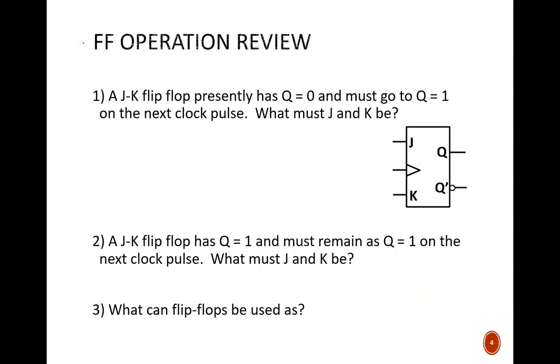The last type of flip-flop is the trickiest because there are two instructions. Let's say a JK flip-flop presently has Q = 0 and must go to Q = 1 on the next clock pulse. What must J and K be?